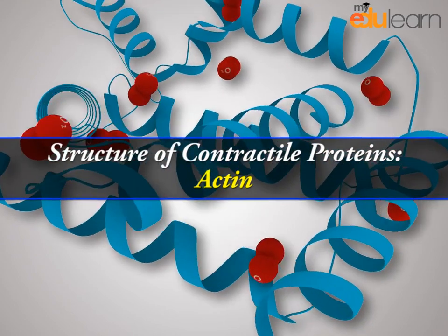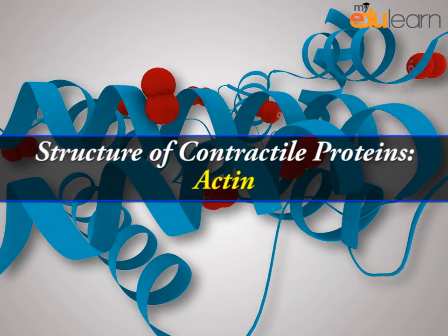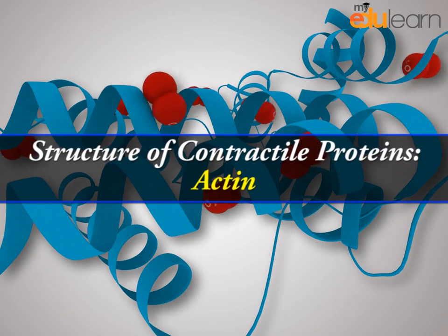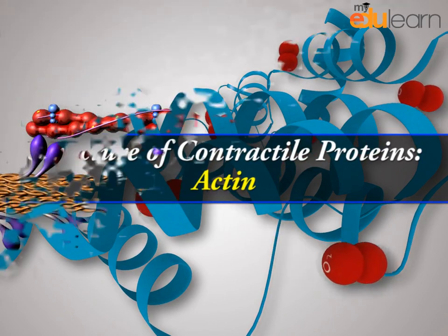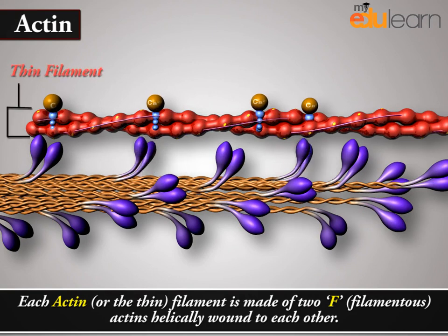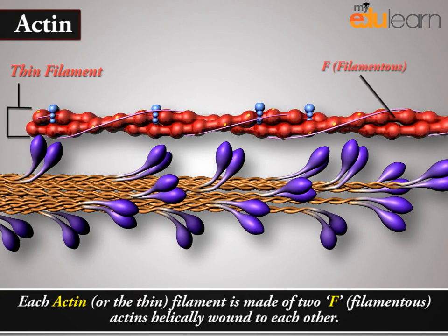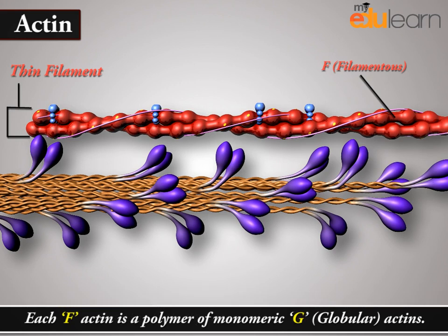Let us now study the structure of contractile proteins — Actin. Each actin, or thin filament, is made of two F-filamentous actins helically wound to each other. Each F-actin is a polymer of monomeric G-globular actins.